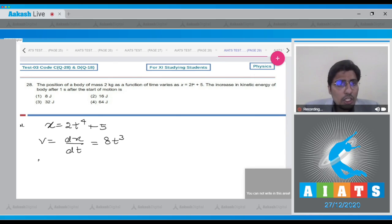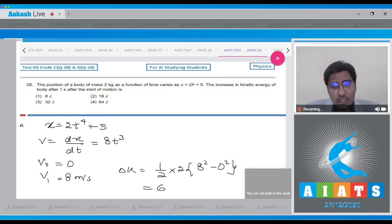Now, the initial velocity is 0. The final velocity can be written as, if we substitute the value 1 in the expression of v, so this will be equal to 8 meter per second. The change in kinetic energy will be equal to half into mass 2 into velocity square 8 square minus initial velocity square 0 square. So this will be equal to 64 joules. And hence, for this question, the correct answer turns out to be option number 4.